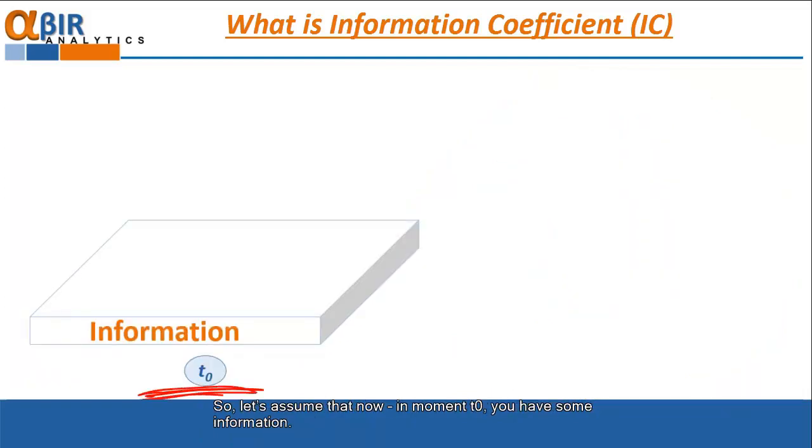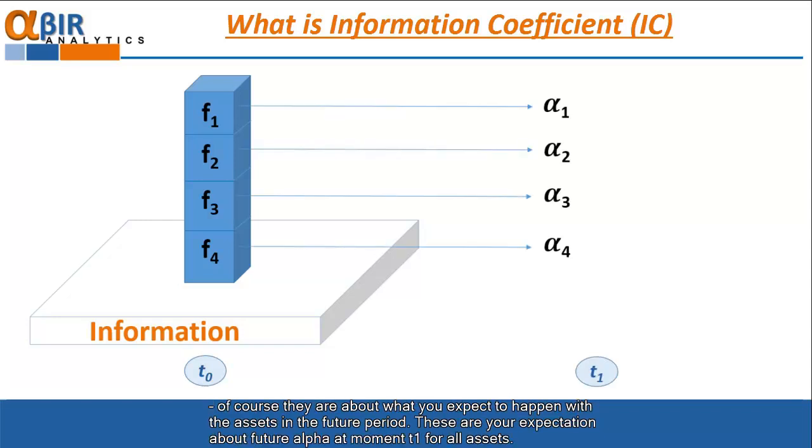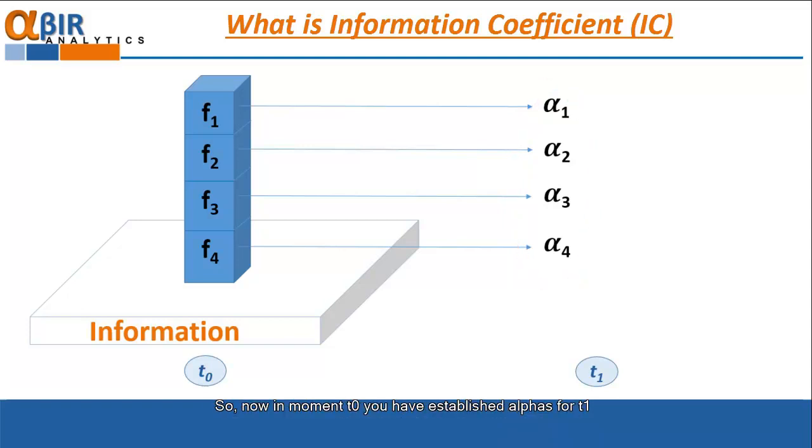So, let's assume that now, in moment T0, you have some information. Based on this information, you establish your forecast about the future alpha. What are these forecasts for? Of course, they are about what you expect to happen with the assets in the future period. These are your expectations about future alpha at the moment T1 for all assets. So, now, in the moment T0, you have established alphas for T1.